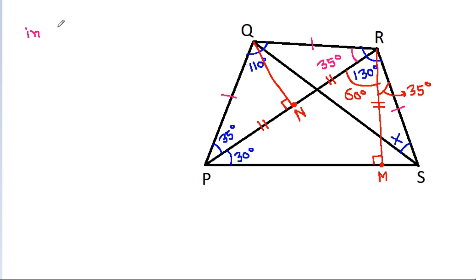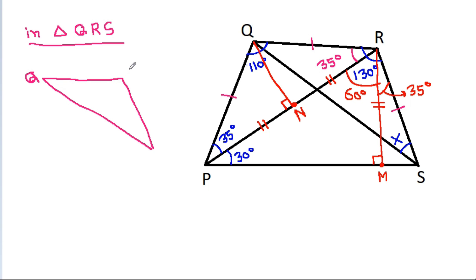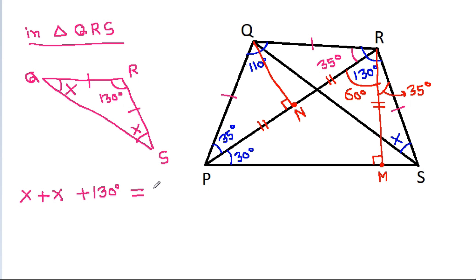Now, in angle QRS, this angle is 130 degrees, and angle RSQ is X. Also, since QR equals RS, angle RQS will also be X. So X plus X plus 130 degrees equals 180 degrees. We get 2X equals 50 degrees, that means X equals 25 degrees.